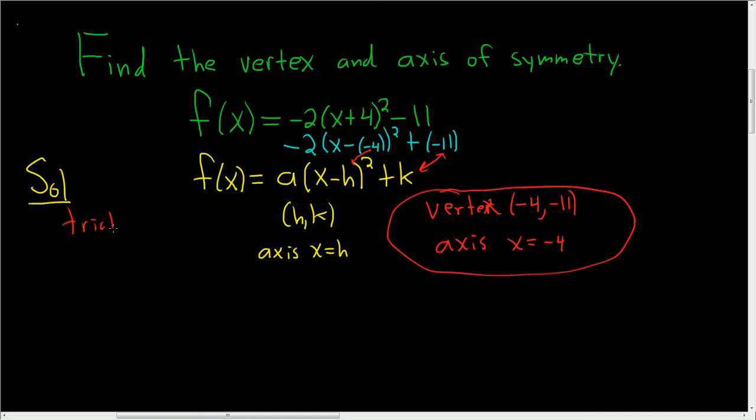A nice trick so that you don't have to think about the formula so much is you can just switch it, keep it. What I mean by that is, in this case you have a positive 4, so you switch it, and you have a negative 11, so you keep it. So switch it, keep it, switch it, keep it. I hope this helps.